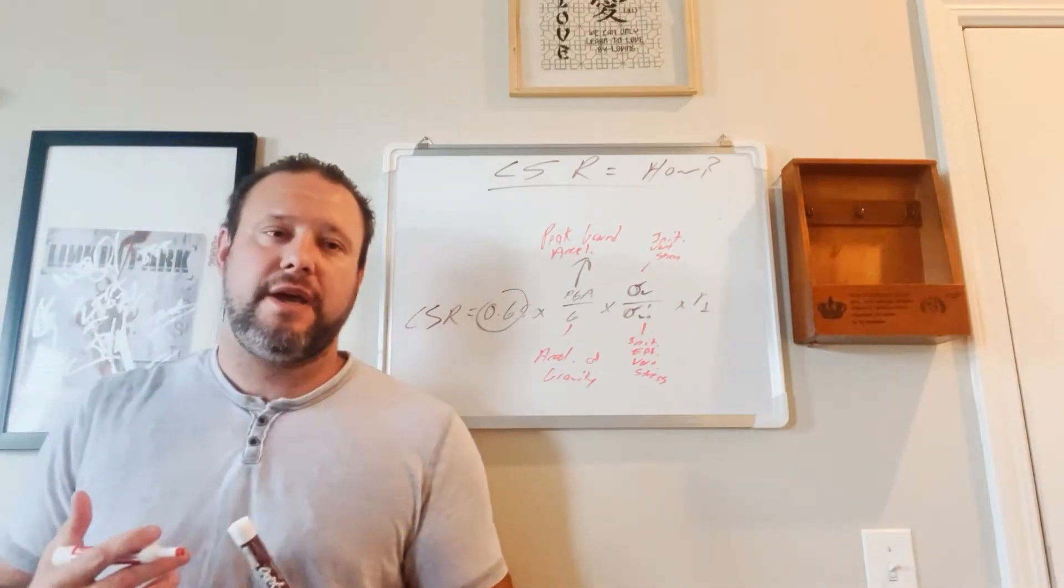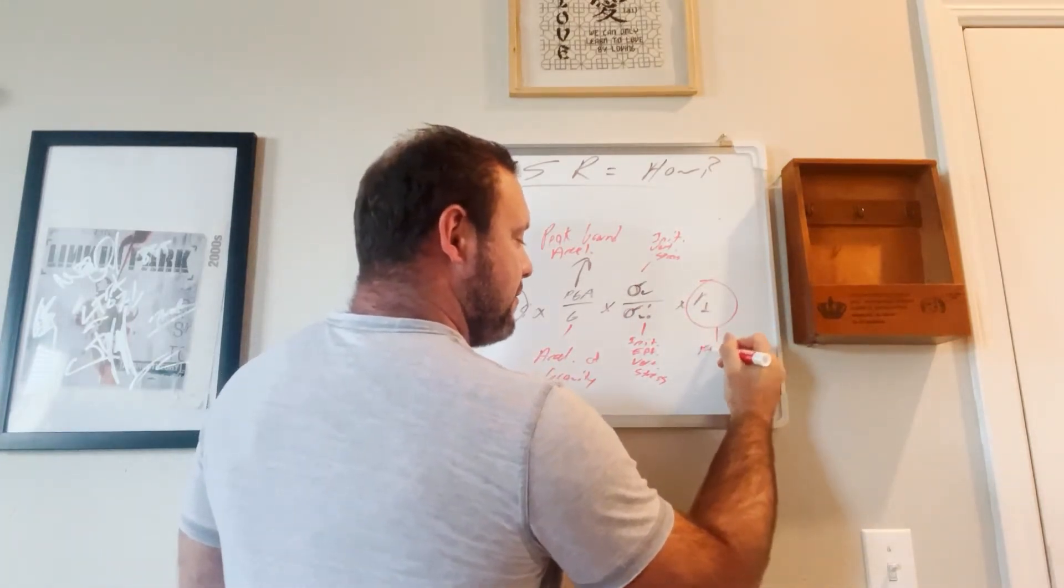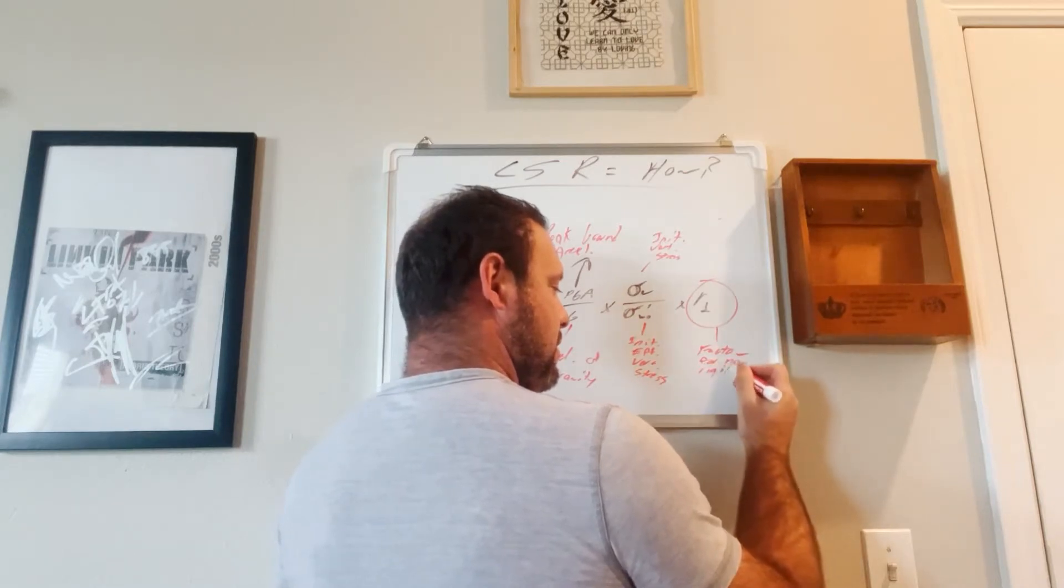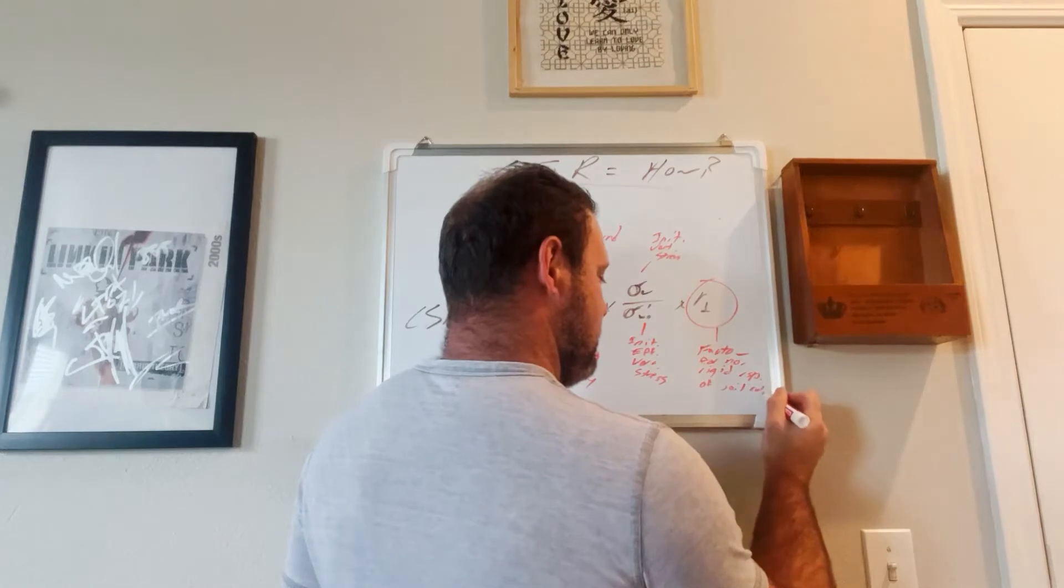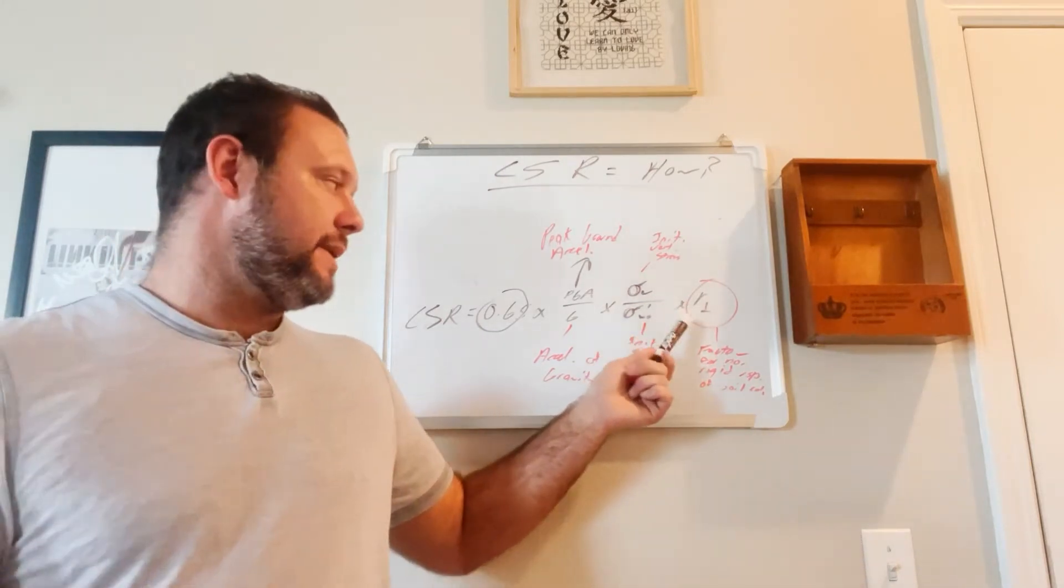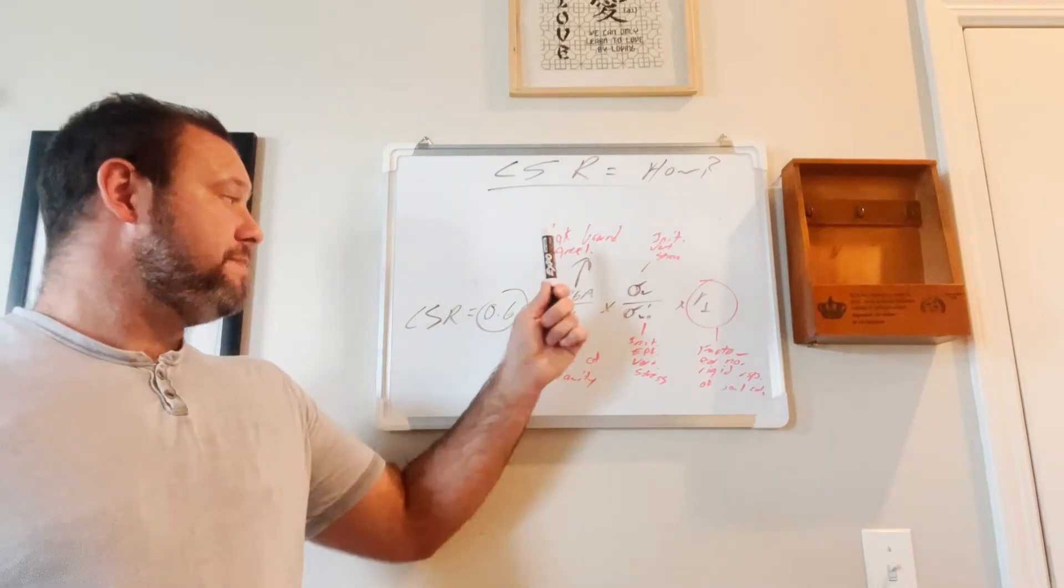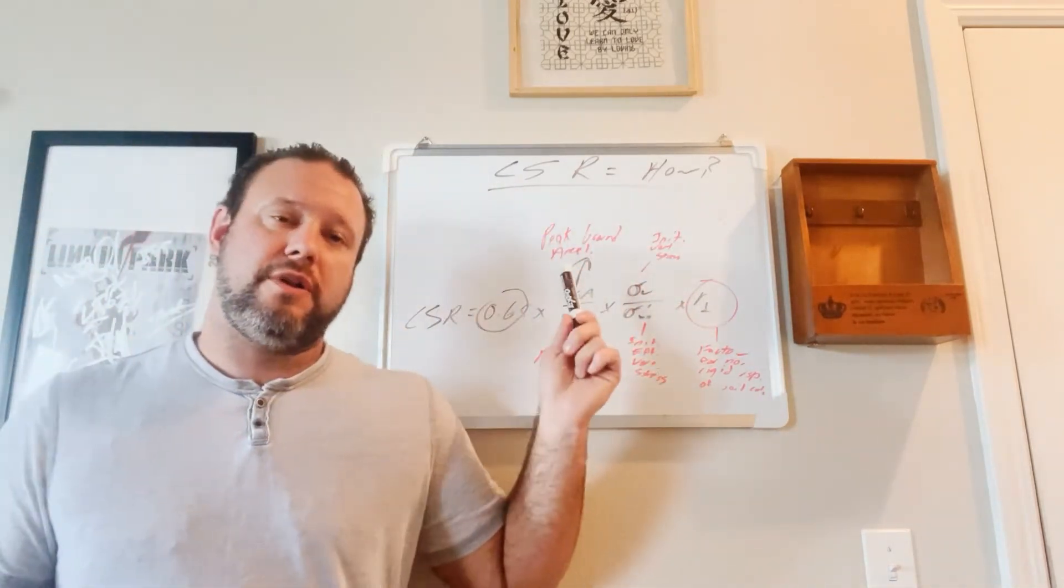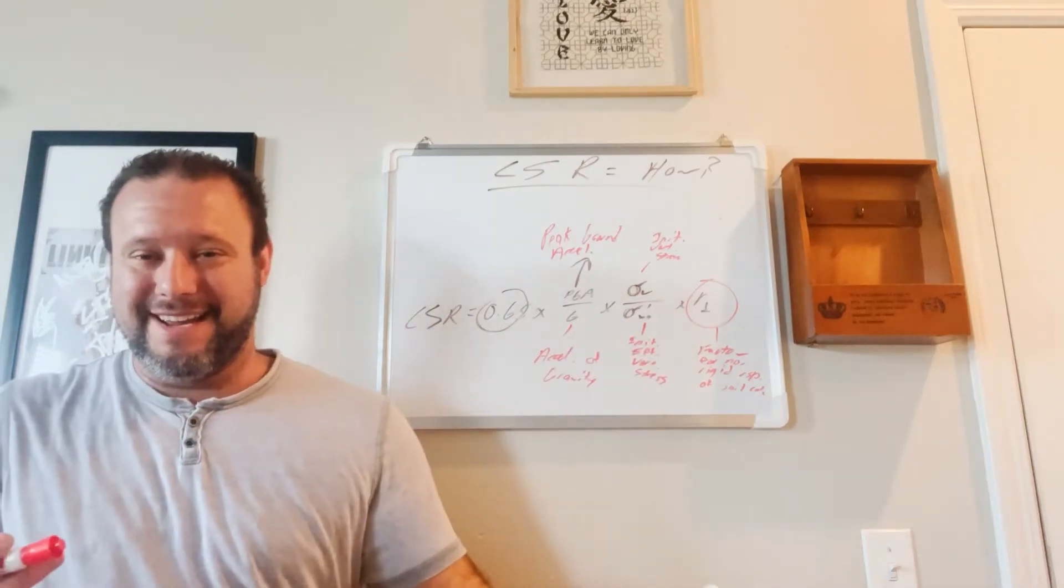And then Rd is a factor for the non-rigid response of the soil column. So you're going to use your soils testing in order to get this one. This is where the difference between SPT and CPT, which we'll talk about in a little bit, changes a lot. So this is one of those areas that you're kind of worried about.